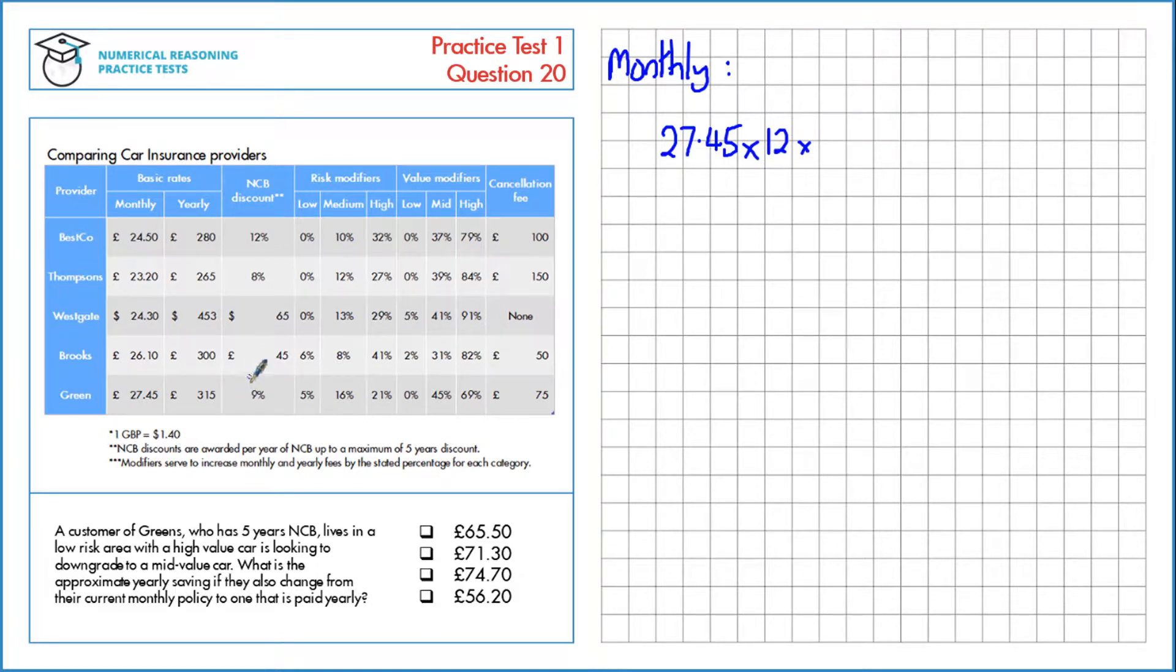Now let's look at the no claims bonus, that's a 9% decrease which means we'd be left with 91% or 0.91, and they have this for 5 years so we'll put that to the power of 5. Additionally they have a low risk area so we need to increase this by 5% or 1.05 for that.